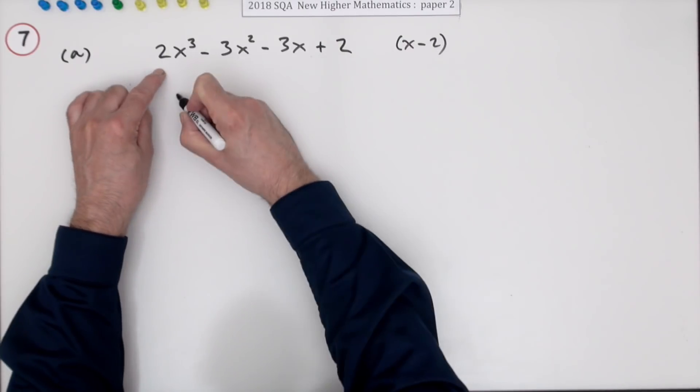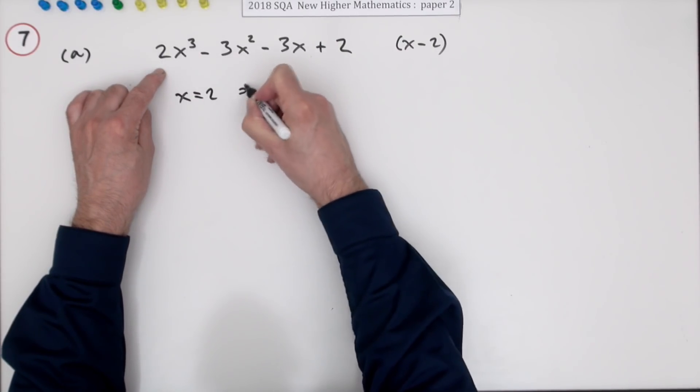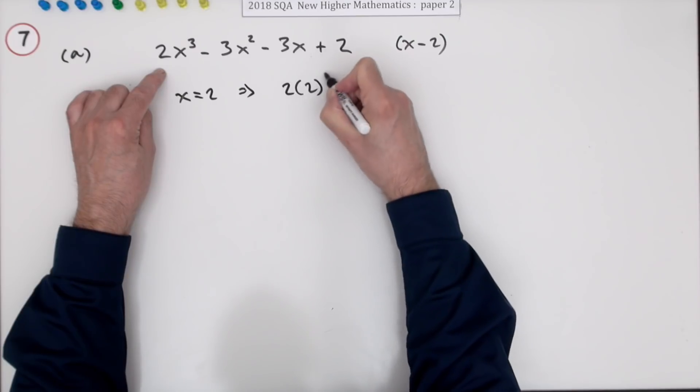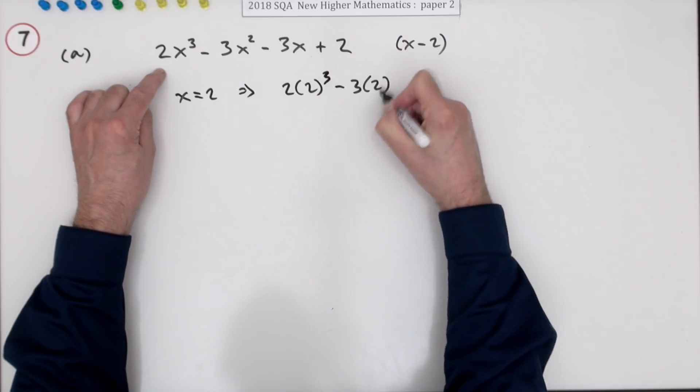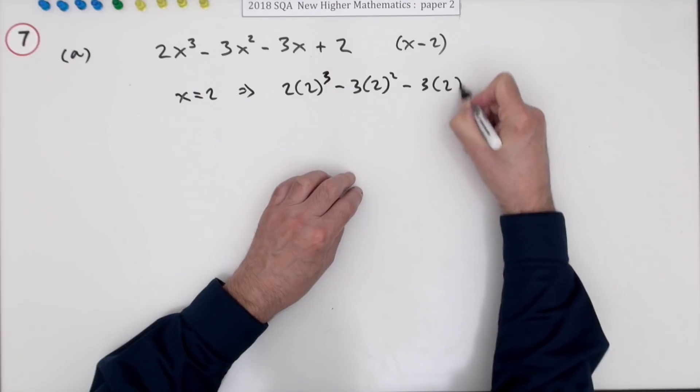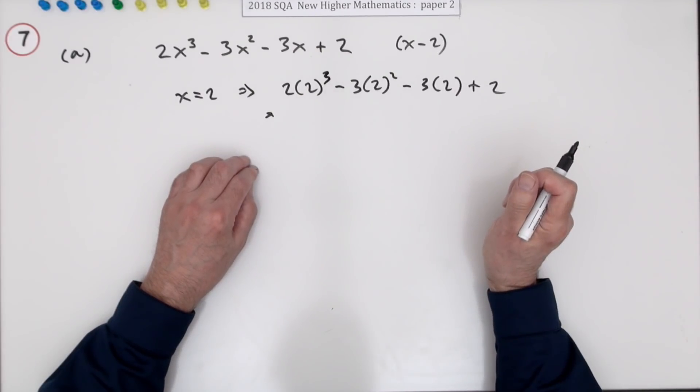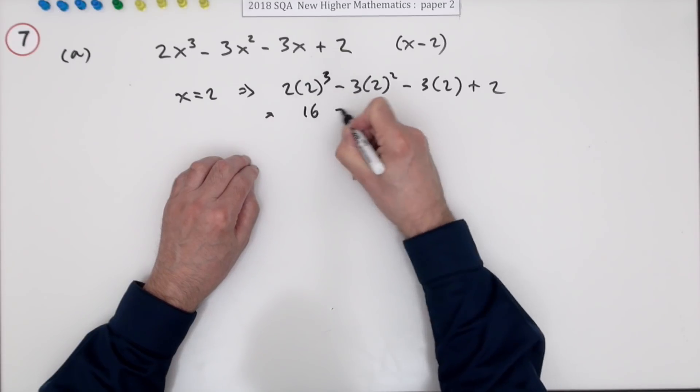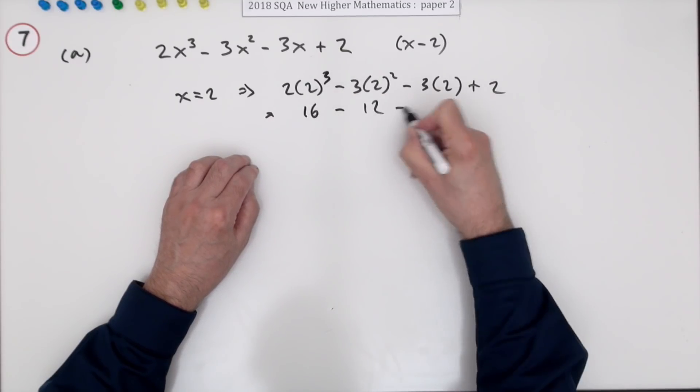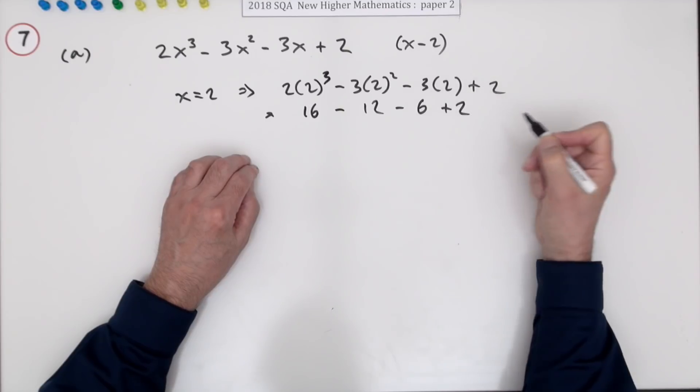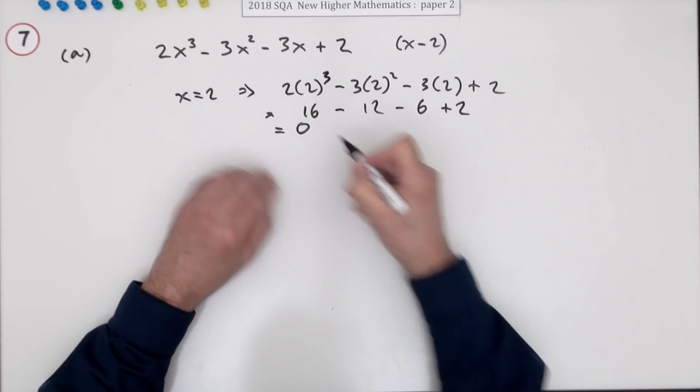So you could do this. You could say if x equals 2 that means you've got 2 times 2 cubed minus 3 times 2 squared minus 3 times 2 plus 2. Then you would work it out. 16, 12, 6 plus 2 and that indeed comes to zero.